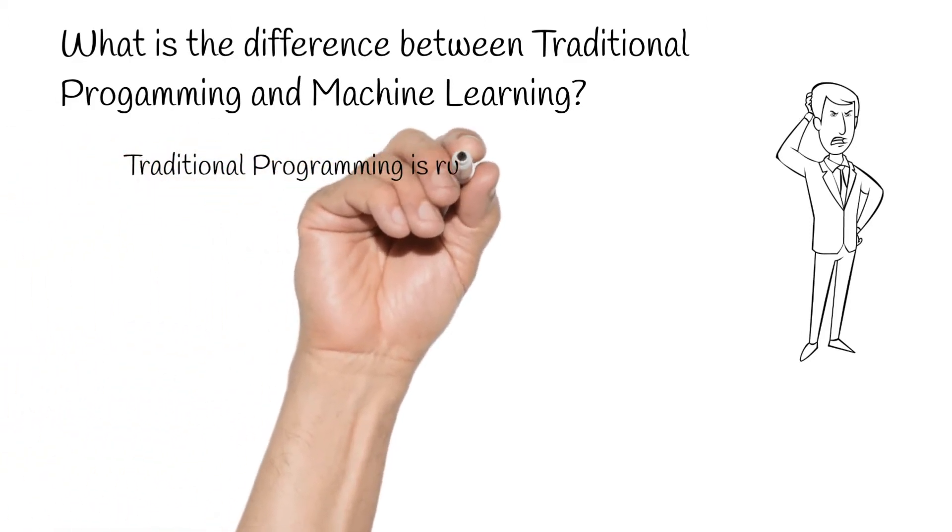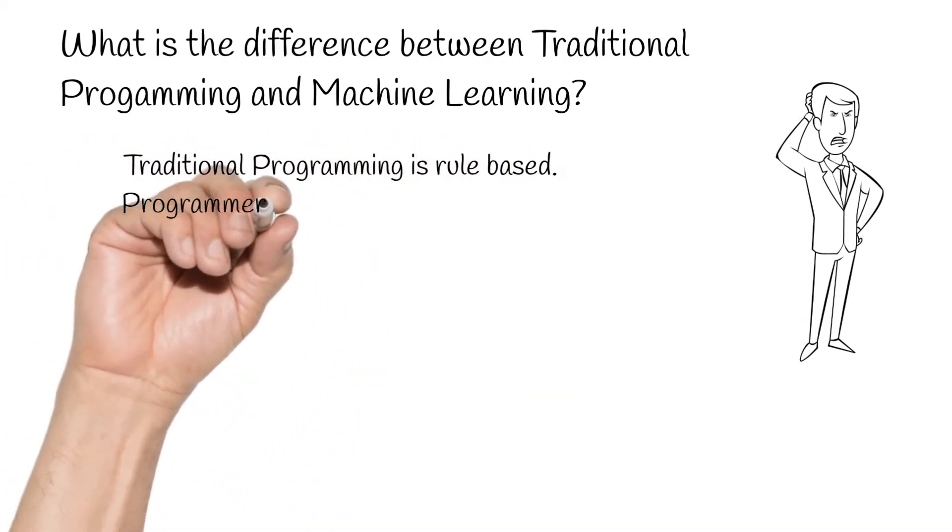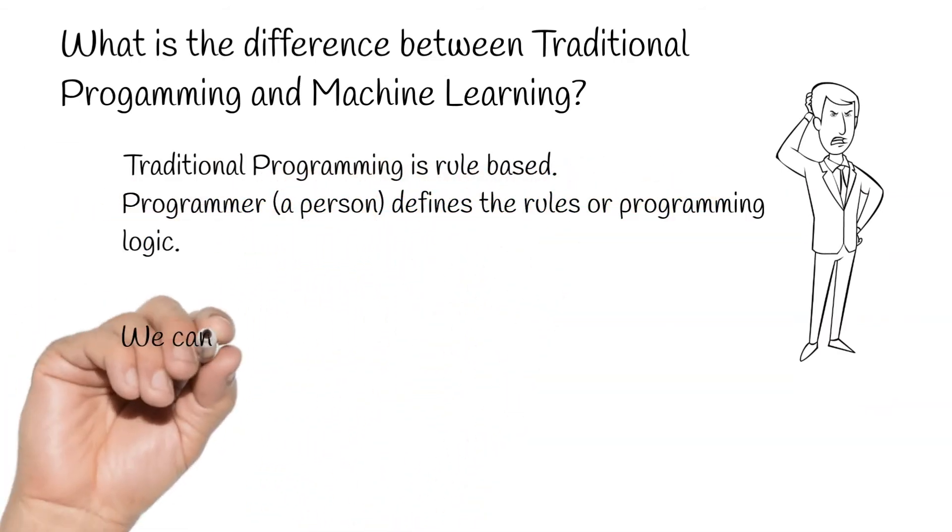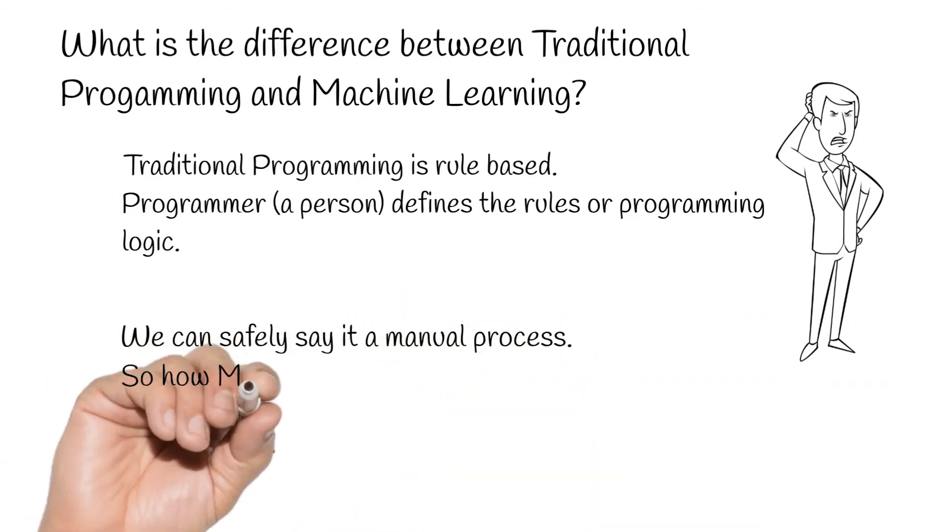We can safely say it is a manual process. Meaning, whenever there is a change, code or rules have to be rewritten. So how is ML different?